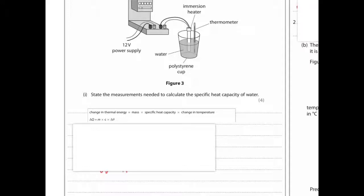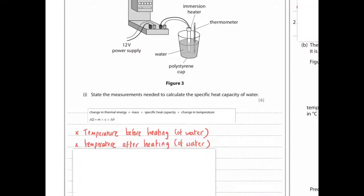So that's quite easy, you just weigh the water. Change in temperature, so you have to measure the starting temperature and the final temperature, and change in thermal energy. So energy, you could use something like a joule meter, or something which measures energy. Temperature before heating water, temperature after heating water, the mass of the water.